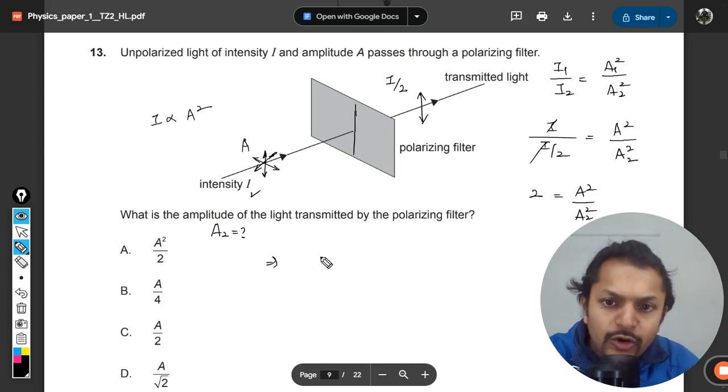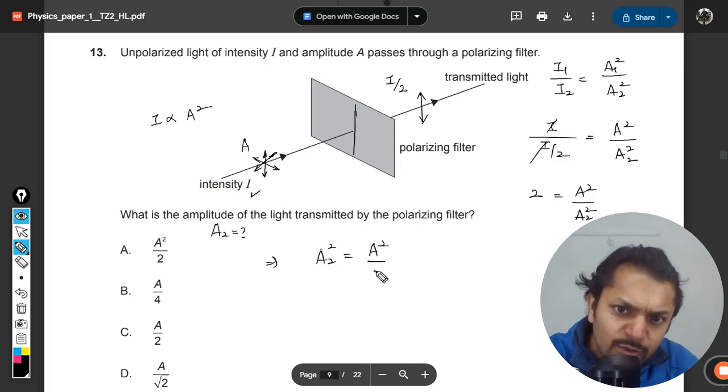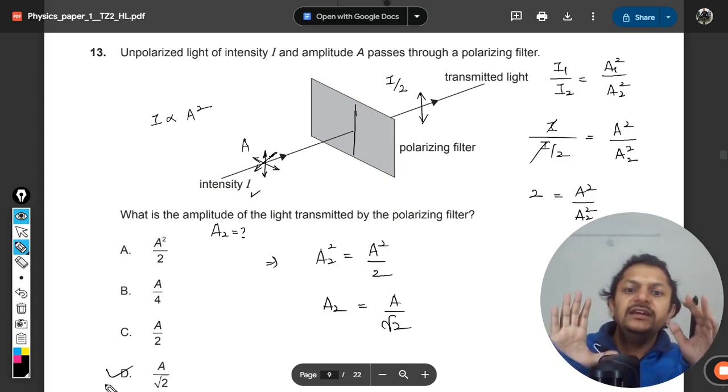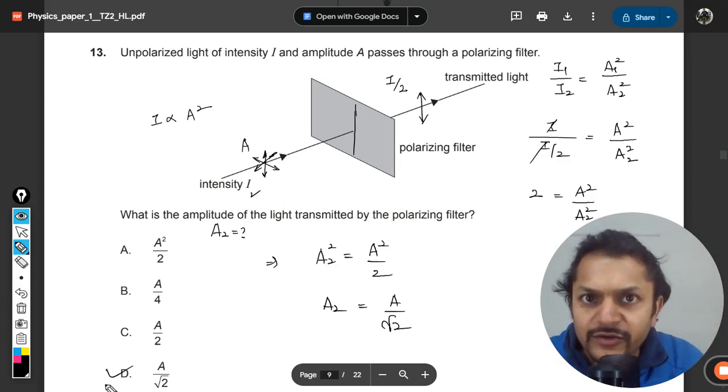And accordingly, I can say that A₂ square is coming out to be A square by 2. So A₂ is coming out to be A by square root 2. Clearly D will be the correct answer for this question.